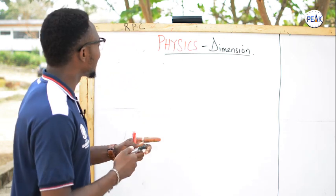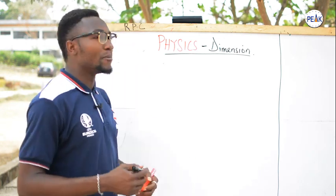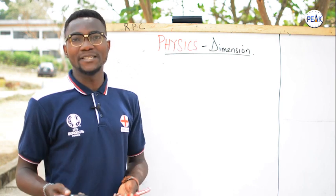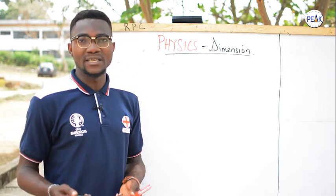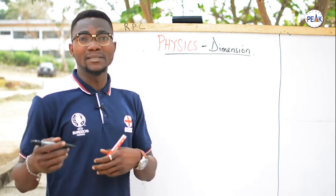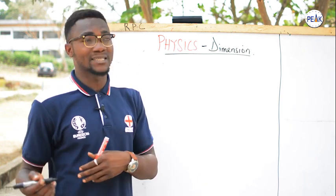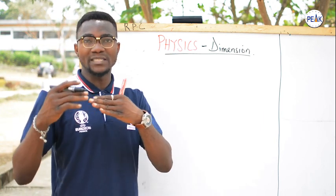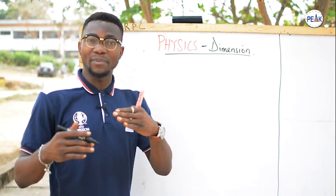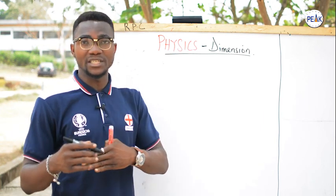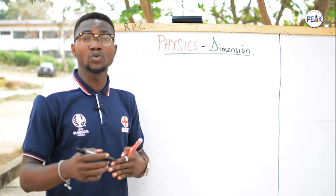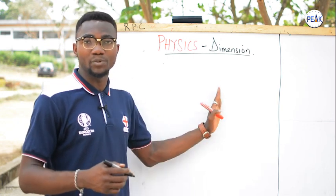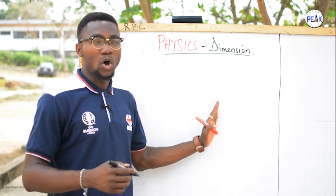Dimensional analysis is basically representing the base units in physics with certain letters. It involves breaking down a particular physical quantity — the unit of a particular physical quantity — in such a way that once you arrive at your base unit, you represent it with the letters I'm going to give you on the board.